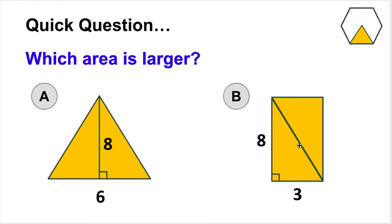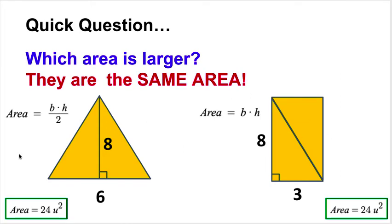For this rectangle, the area is base times height — that's three times eight, also giving 24. Both shapes have the exact same area. This is actually how the triangle area formula works in the first place: if you take the base, chop it in half to get three, and flip the triangle up and over, you end up with a rectangle. So one-half base times height is the same calculation as base times height divided by two.